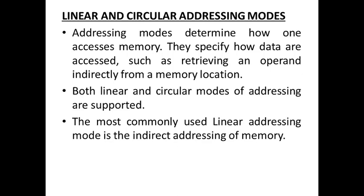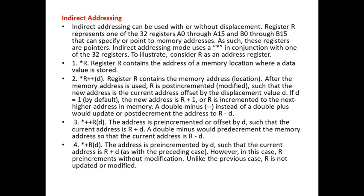Though there are various addressing modes under linear, we look into the indirect addressing of memory, which is most commonly used. Indirect addressing can be used with or without a displacement. A particular register R represents one of the 32 registers — A0 to A15 and B0 to B15 — that can specify or point to a memory address. These registers are called pointers.